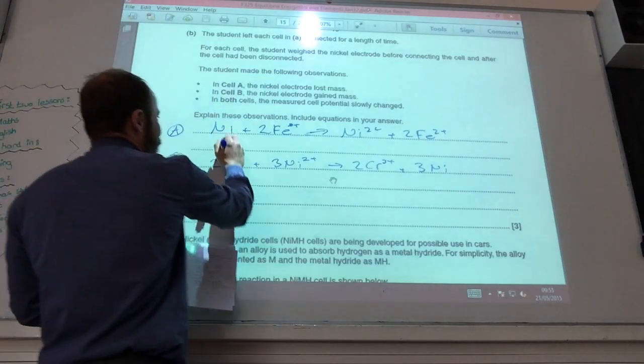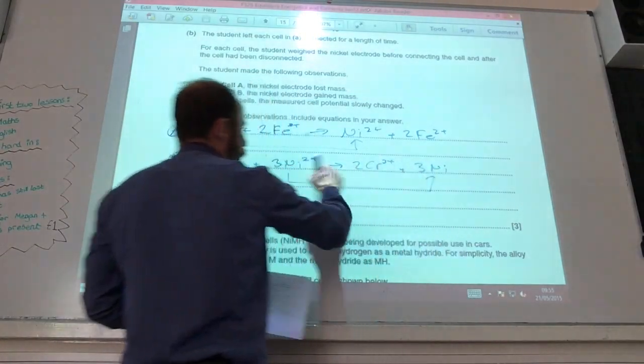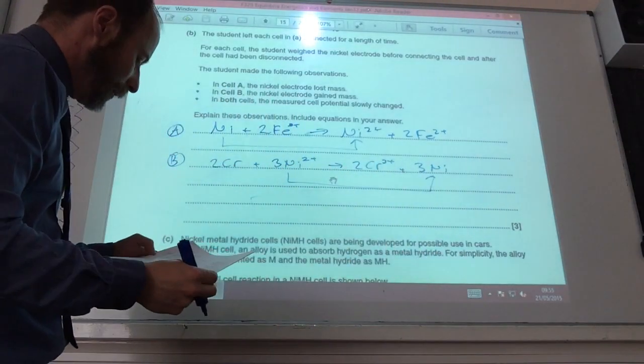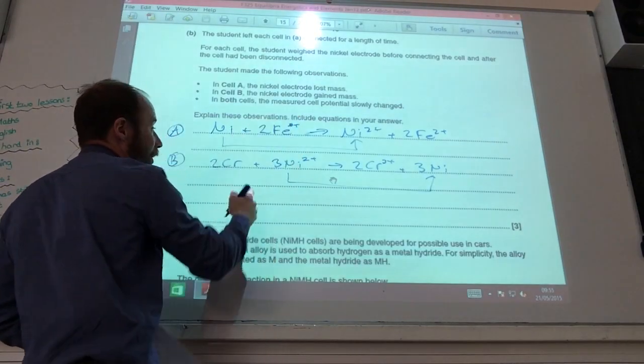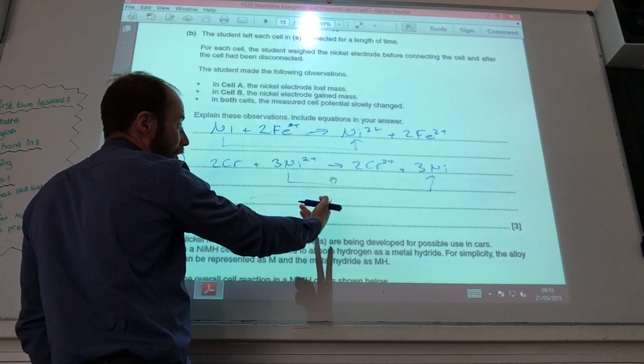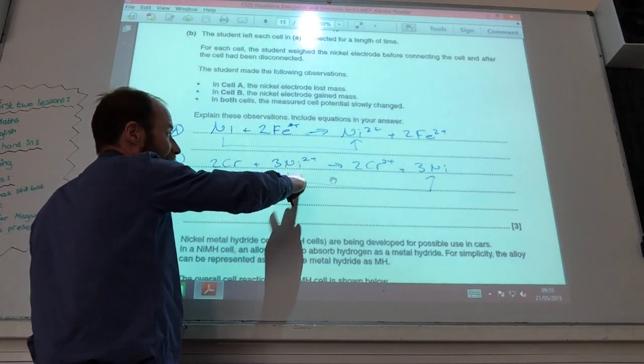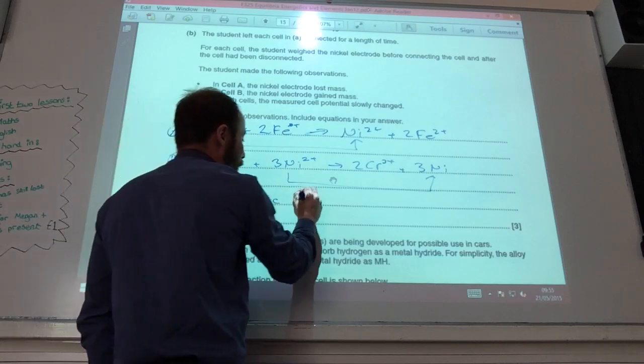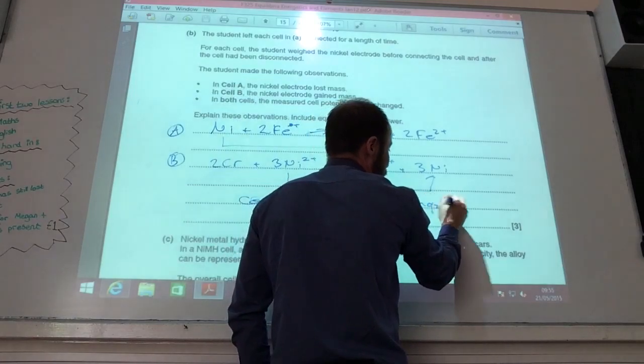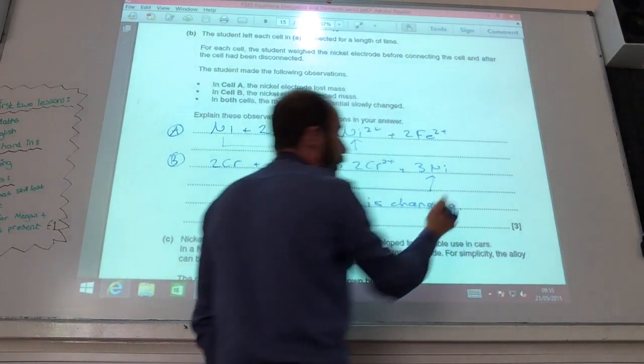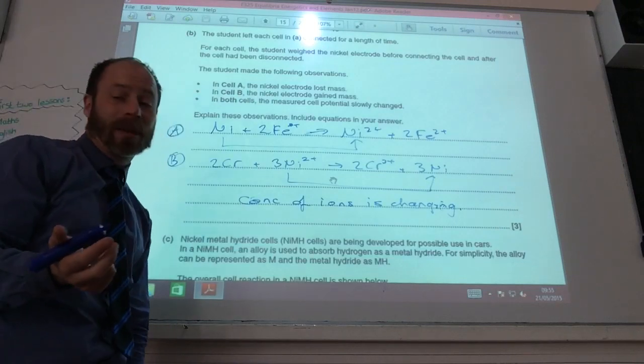So you can see in cell A, nickel is going into the solution as nickel 2 plus. But for cell B, nickel 2 plus is coming out of the solution and forming nickel metal. In both cells, the metal cell potential actually slow to change. Well that's because I'm changing the concentration of my ions. As nickel 2 plus becomes nickel, obviously the concentration of nickel 2 plus is decreasing. So we can say concentration of ions is changing. And obviously as you change the concentration of the ions, we're now no longer in standard conditions at one mole per decimeter cubed. So your electrode potentials will change.